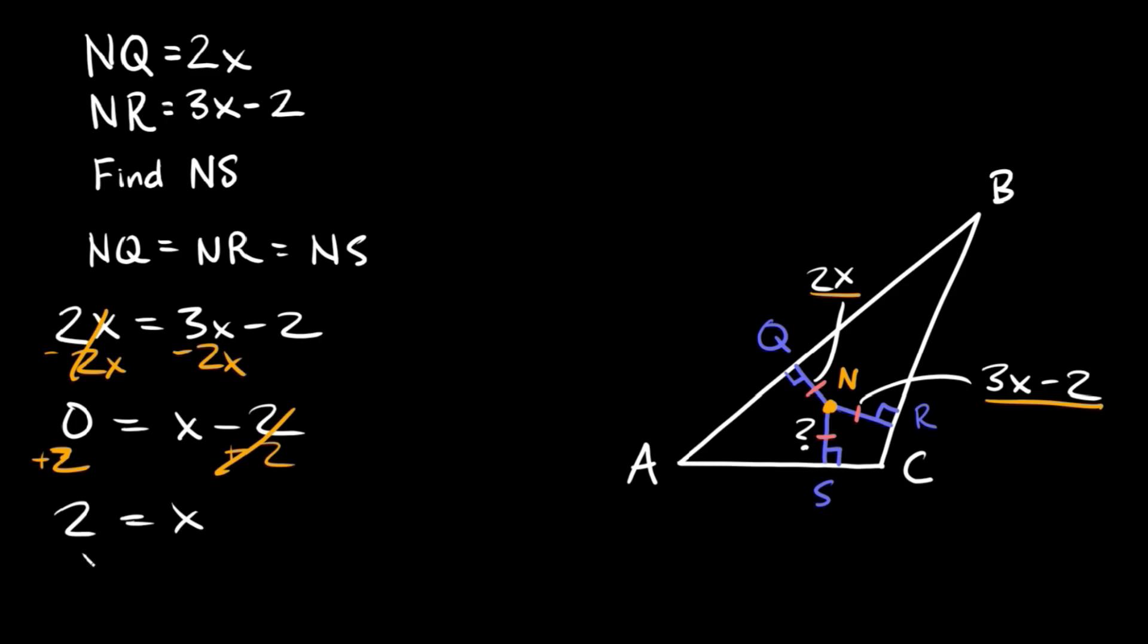Okay cool. So now that we know what x is equal to, now we can plug it into either of these two little expressions and we should get the same answer. So if we plug in a 2 for x right here, well 2 times 2, that's equal to 4. If we plug in a 2 right here, 3 times 2, that's equal to 6, and 6 minus 2 is also equal to 4. So then that means that this length NS, we're trying to find NS right here, is also equal to 4.